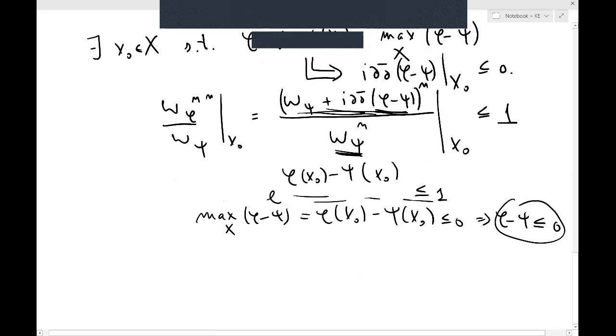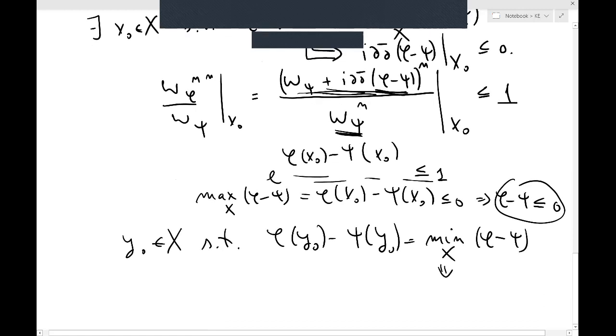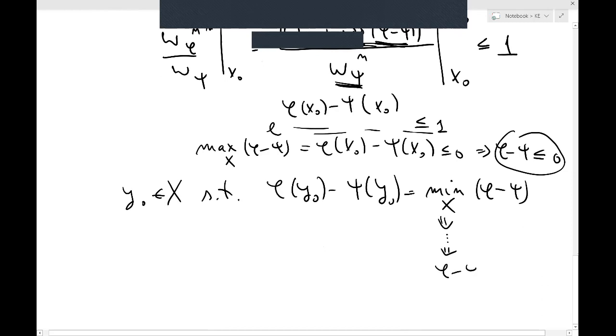So now when you play the same exact argument at the minimum, so now I'll pick y in X such that φ(y_0) minus ψ(y_0) is equal to the minimum of φ minus ψ on X. So by playing the same game, you get that φ minus ψ is actually positive. So these two circled inequalities will imply that φ is equal to ψ, what I want to show.